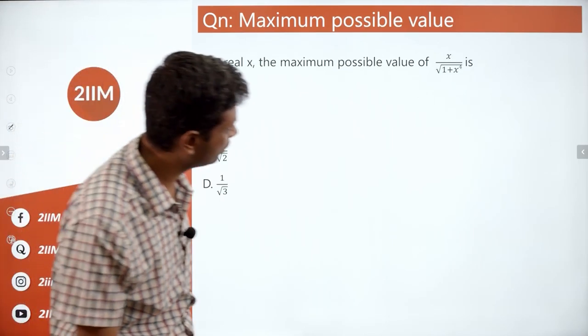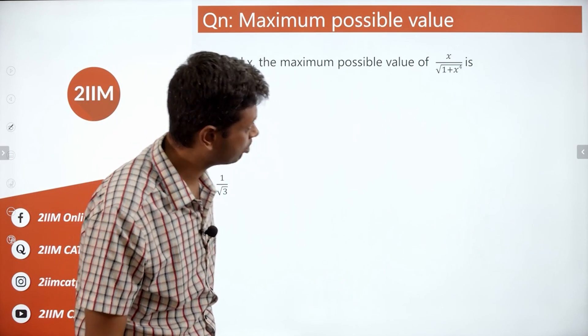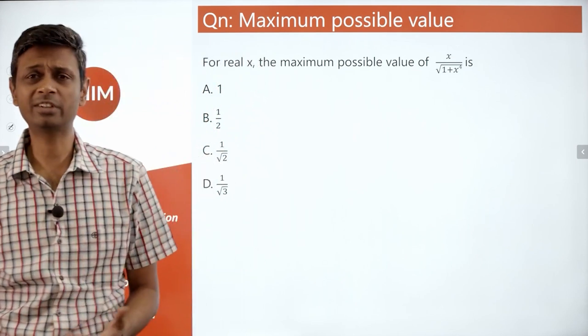For real x, the maximum possible value of x by square root of 1 plus x power 4. These kind of questions trick 1 in the book.